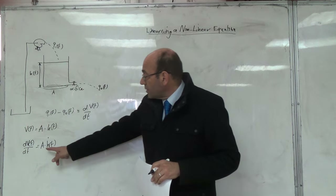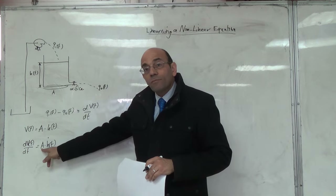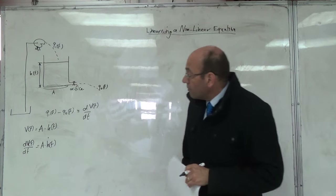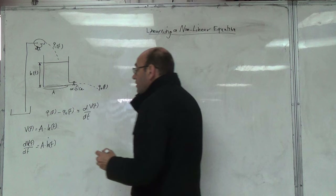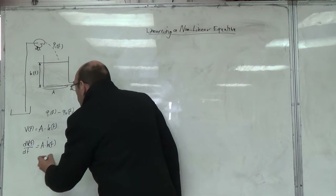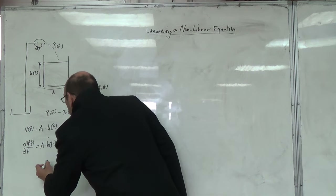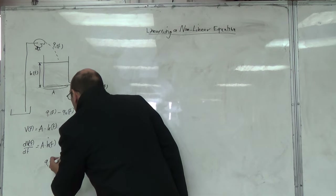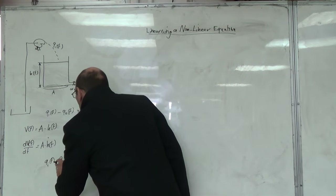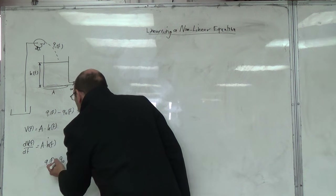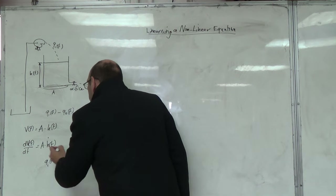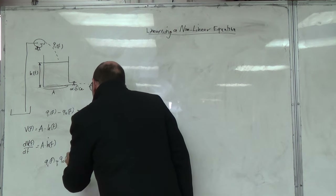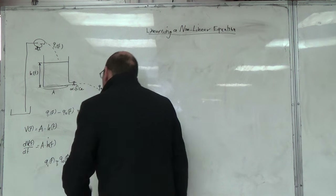It's not going to change the time constant; we're going to work from here. We're going to have A times Ḣ(t). So we're going to have Q_in(t) minus Q_out(t) equals A Ḣ(t).